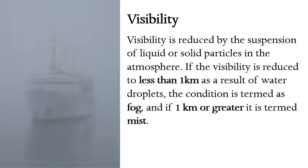Visibility is reduced by the suspension of liquid or solid particles in the atmosphere. If visibility is reduced to less than one kilometer as a result of water droplets, it is called fog. If it is more than one kilometer, it is called mist. We will talk about the difference between the two.